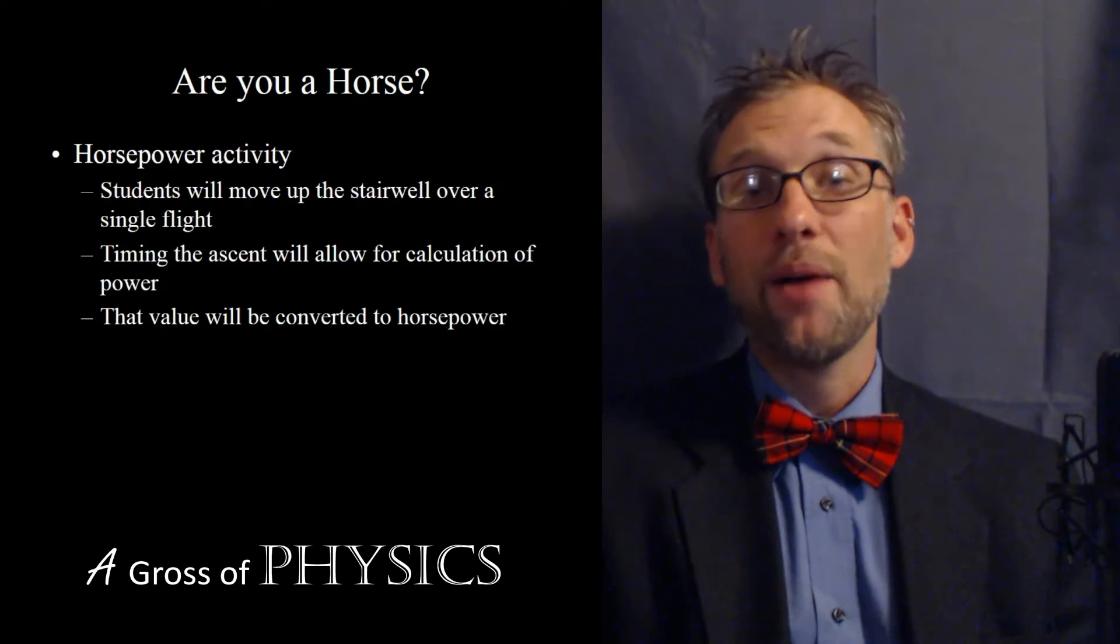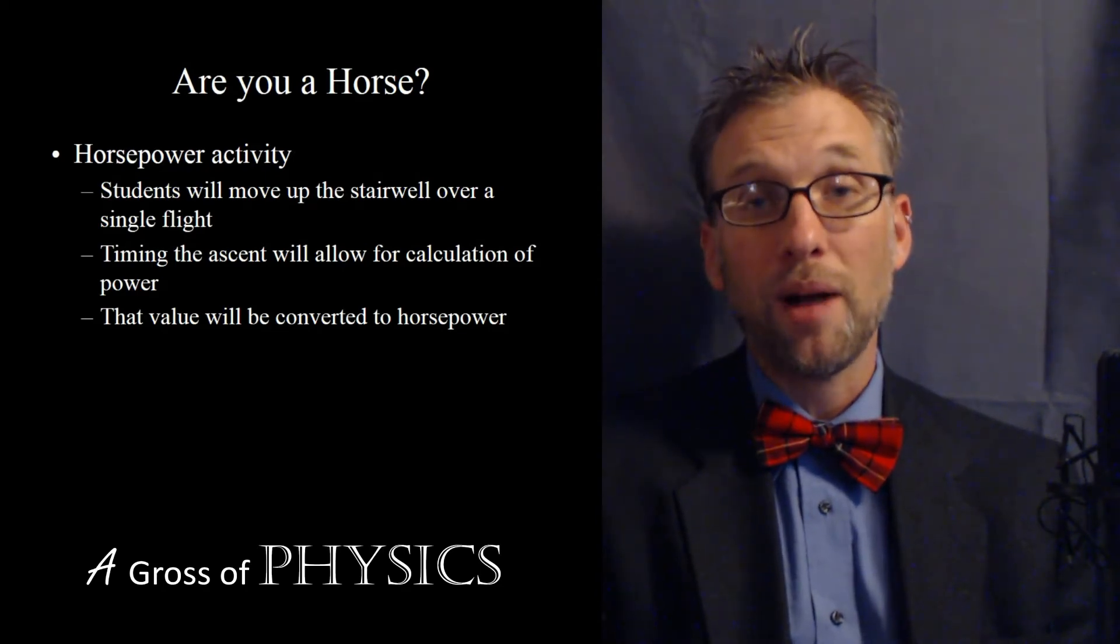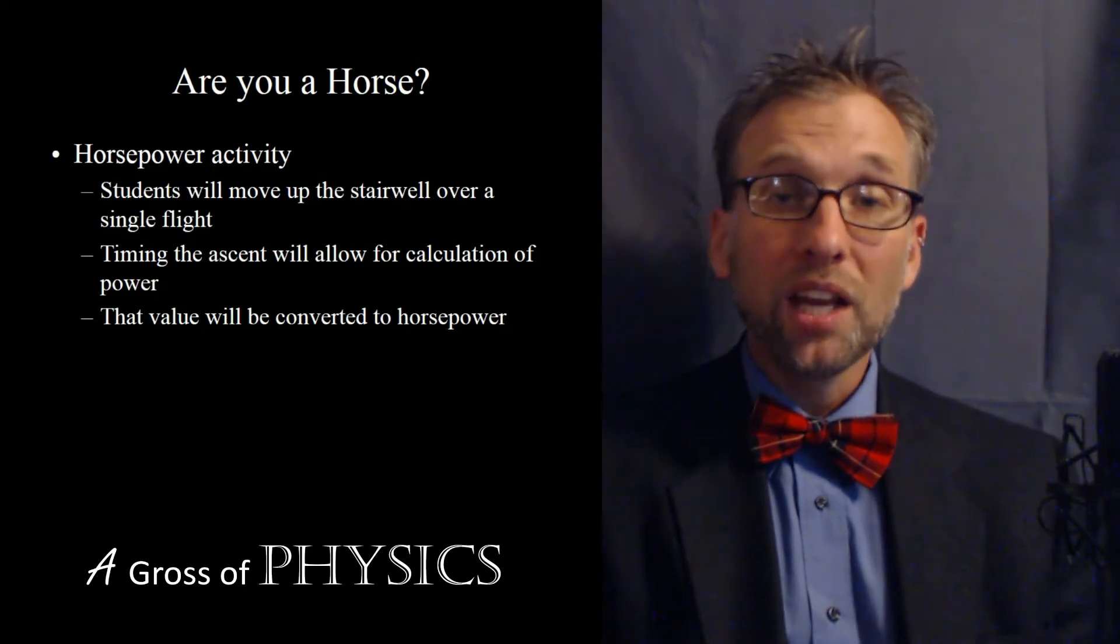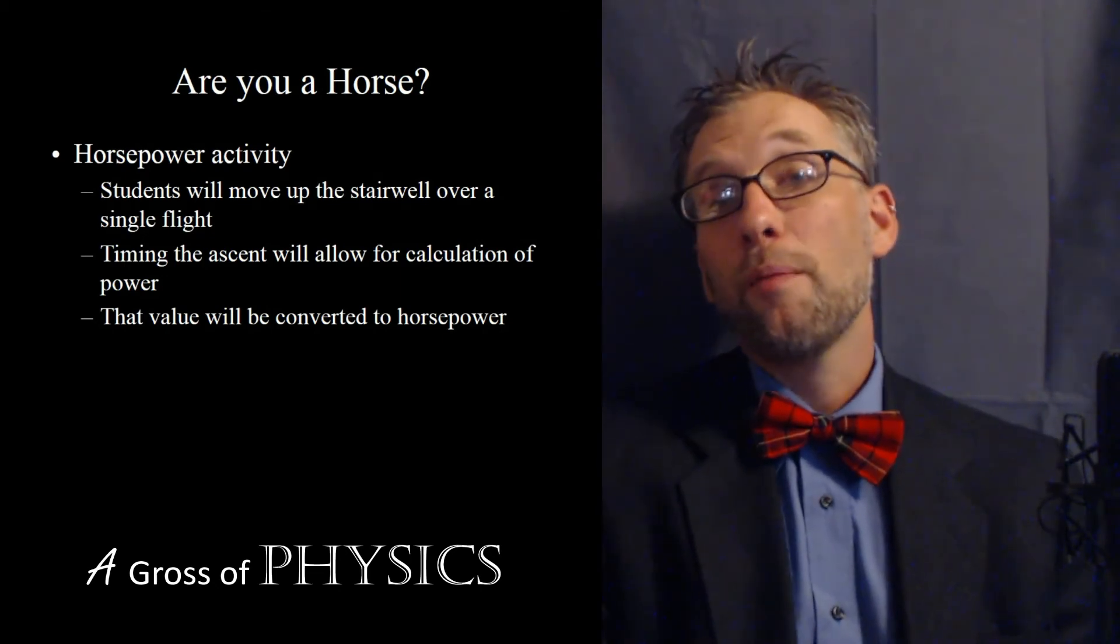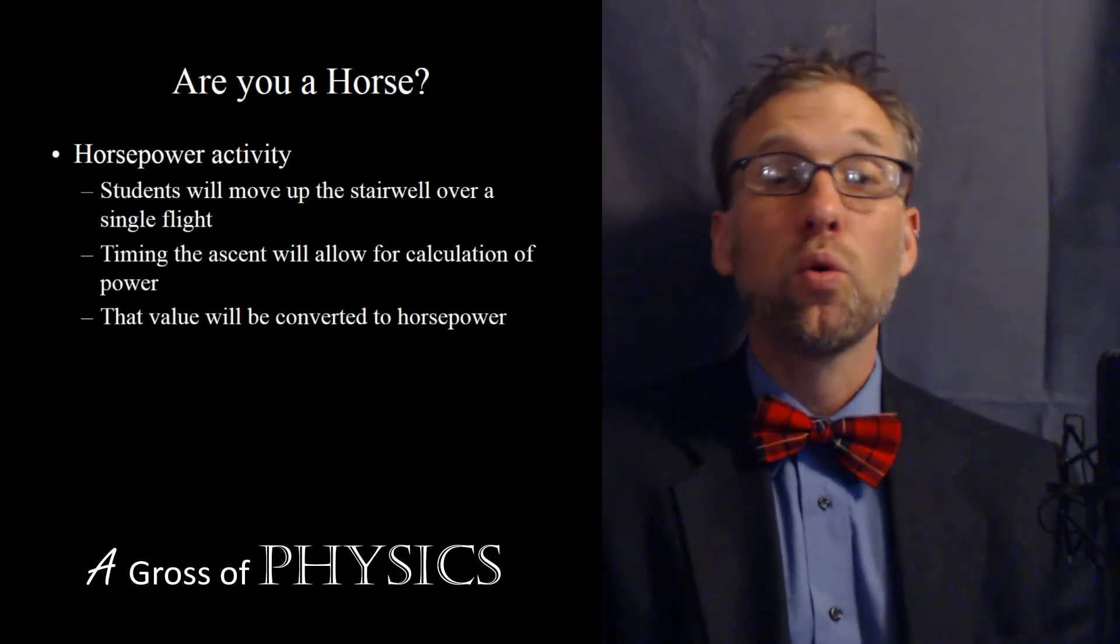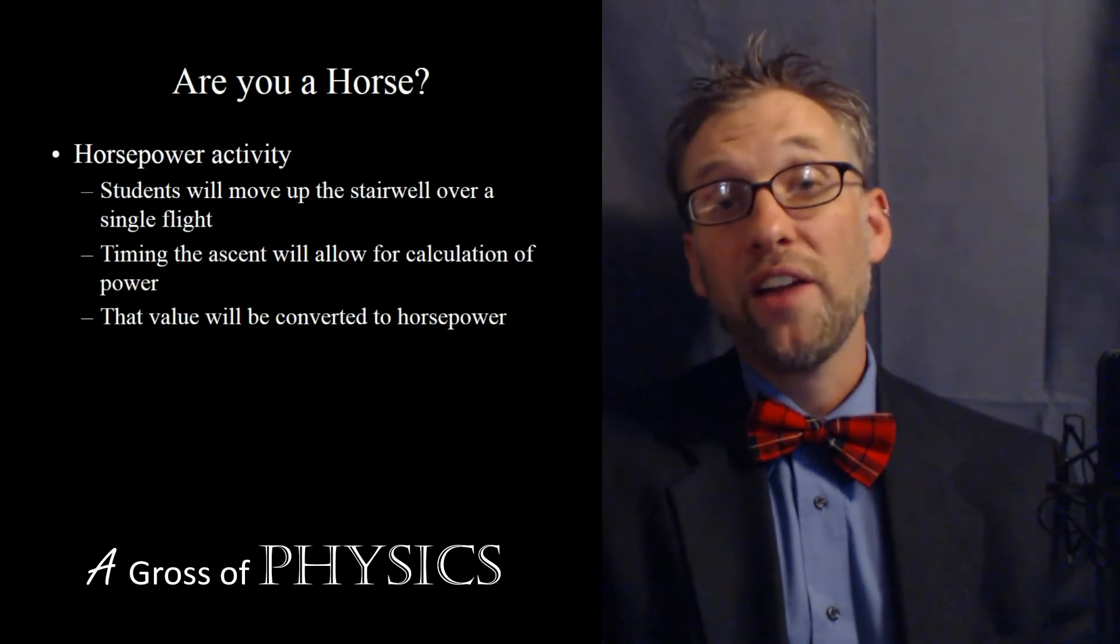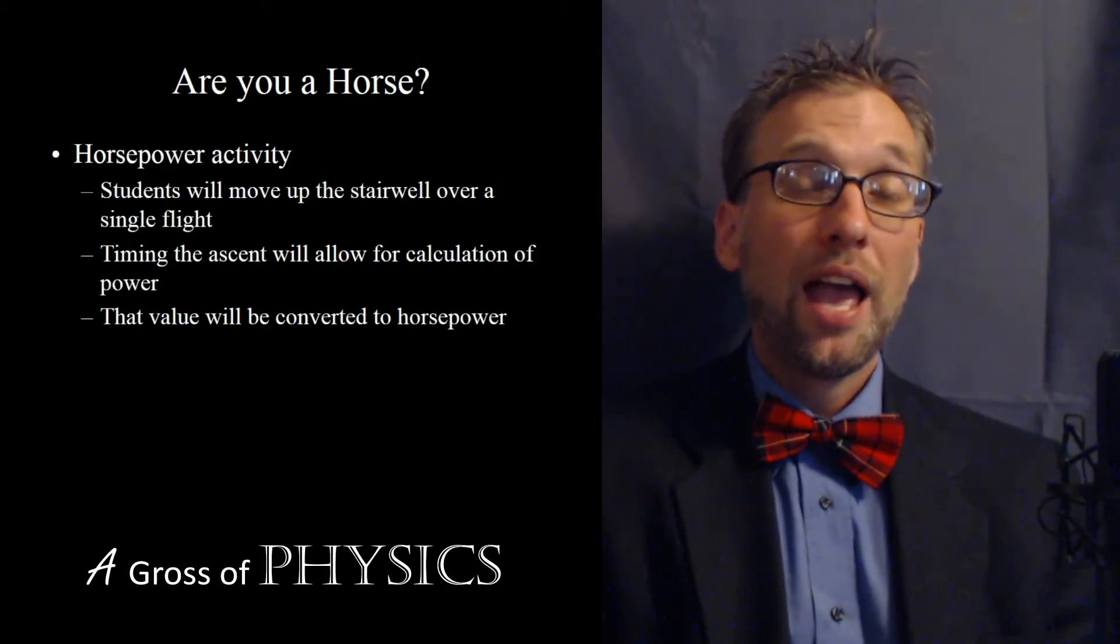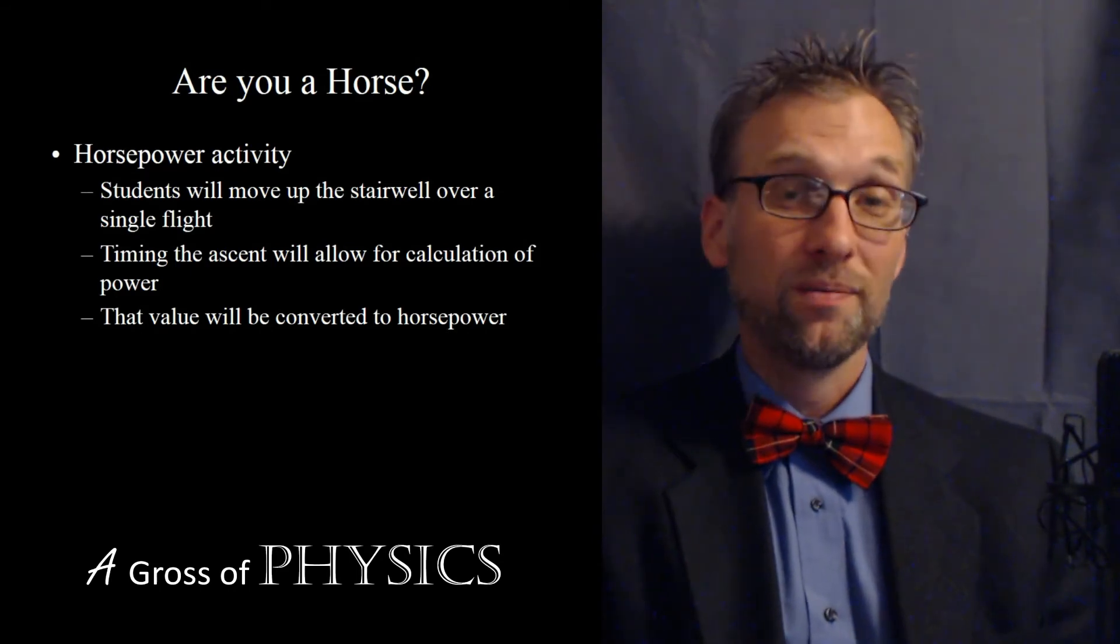If you run up this flight of stairs and time how long it takes, you can divide the work, which is going to be consistent for your body and that set of stairs, by the time. If you get a value bigger than 746, you're a horse. So you can compare your output to a horse's output by just moving up a flight of stairs. If you have a flight of stairs handy and you have a stopwatch and you're going to do it in a safe manner, you can determine whether or not you are a horse.